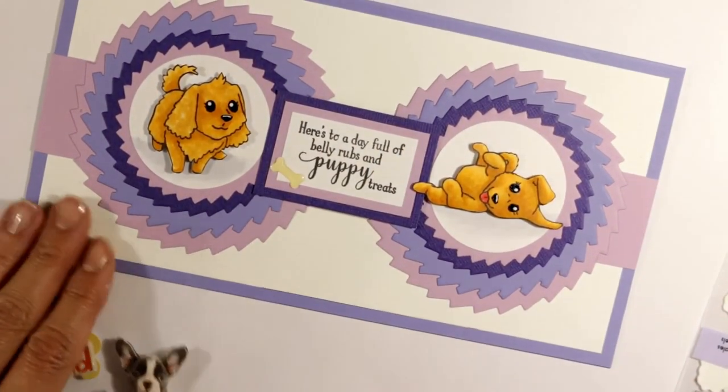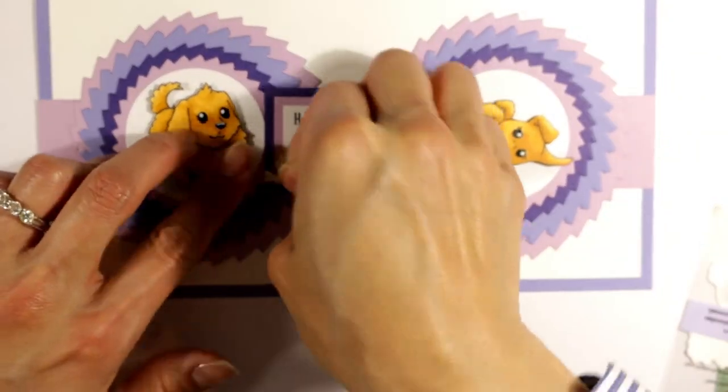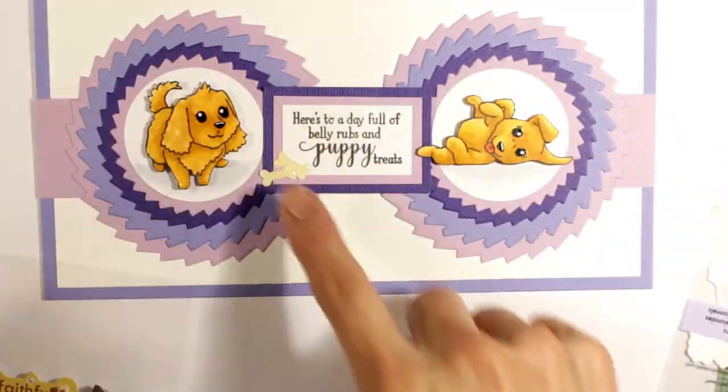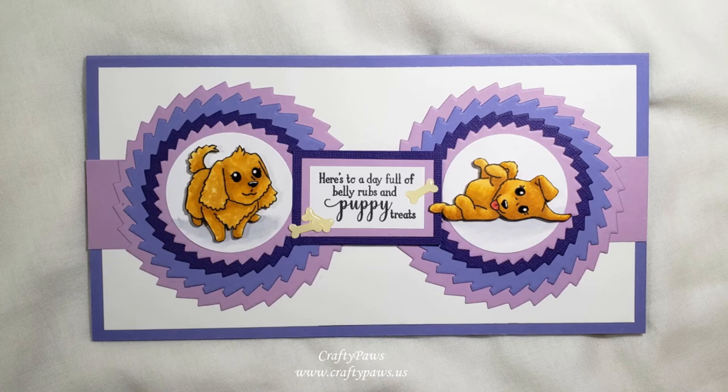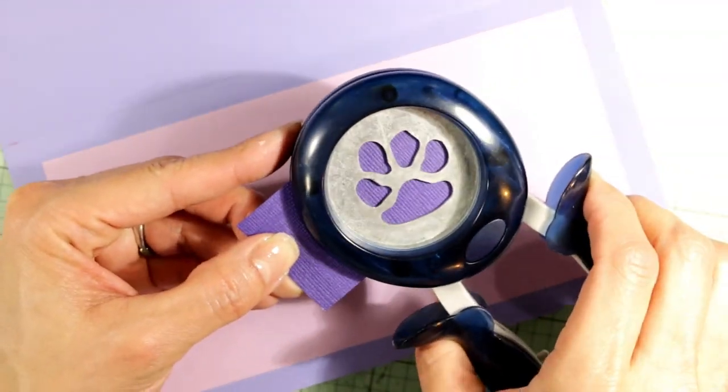I decided I would use a few enamel bone stickers that I had in my stash just to add a little extra interest and embellishment to that sentiment. Now for the inside card liner, I had more of that lavender cardstock.